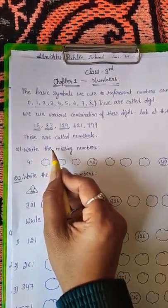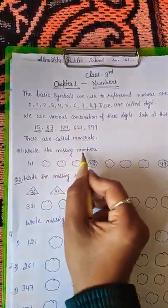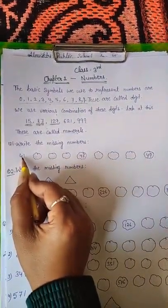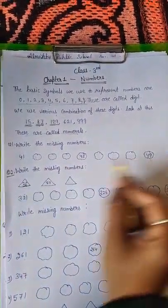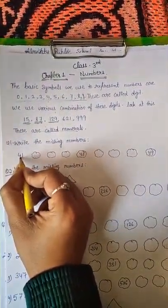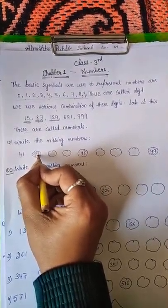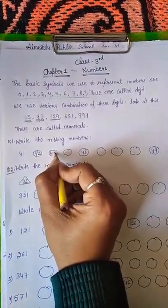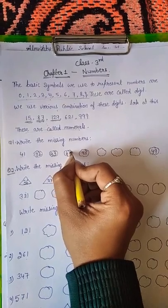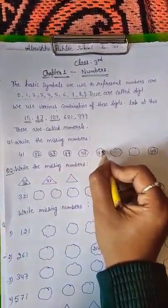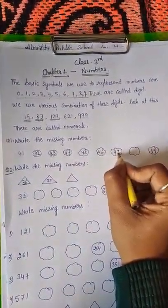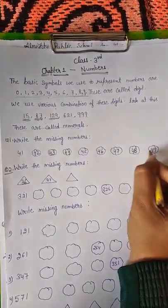So let us do some exercise. Write the missing numbers between 41 and 49. So after 41 is 42, 43, 44, 45, 46, 47, 48 and 49.